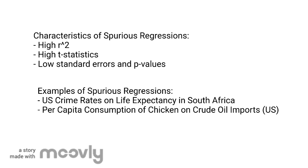Examples of spurious regressions include US crime rates on life expectancy in South Africa, and per capita consumption of chicken on crude oil imports in the United States.